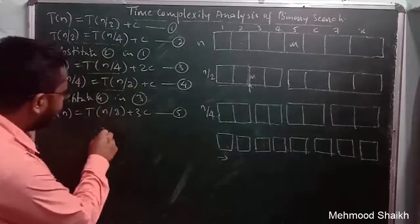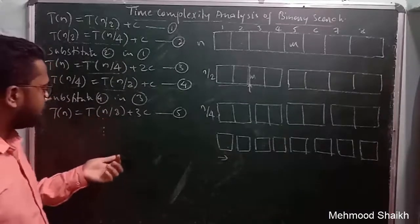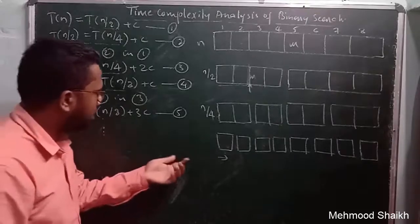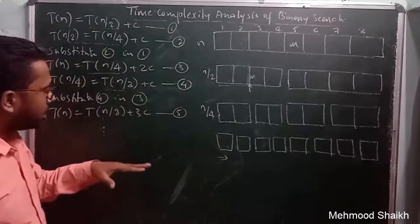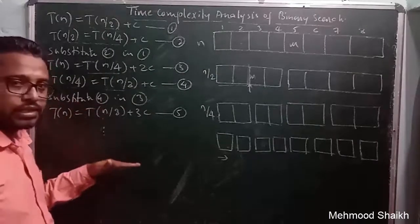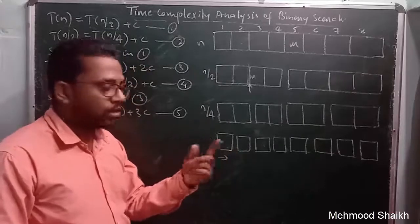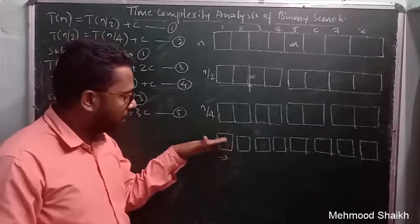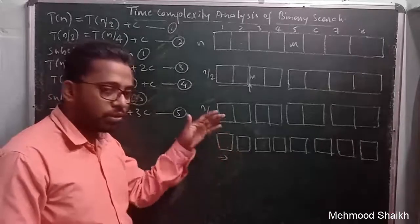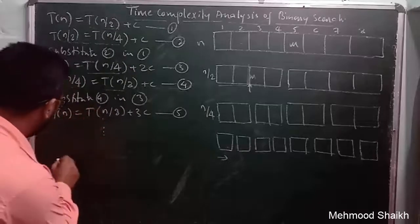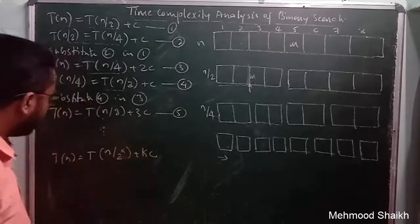Continuing this pattern, we get T(n/16) + 4c, T(n/32) + 5c, and so on. We keep dividing the problem into sizes n/8, n/16, n/32. After k iterations, we reach an array of size 1, giving the general equation T(n) = T(n/2^k) + k·c.